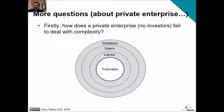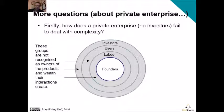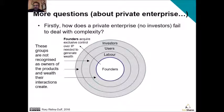It's really quite simple. Labour, users and investors are not recognised as owners of the products and wealth that their interactions create. Wealth is created when people who labour produce goods and services that users want to use, and people who back them often share in the wealth that is created. Also, founders acquire exclusive control over intellectual property needed to generate wealth. What this means is that people who actually create that intellectual property — the labour force of the organisation — are then excluded from the wealth that is generated by it.